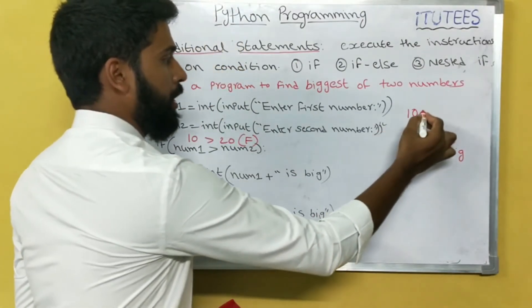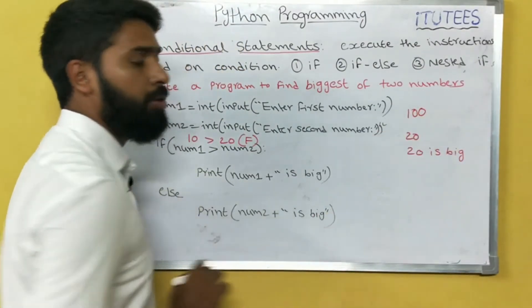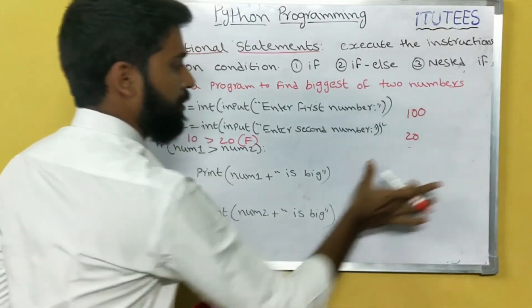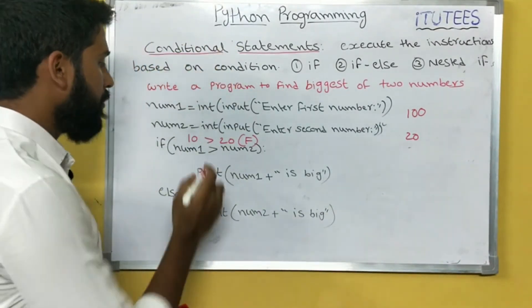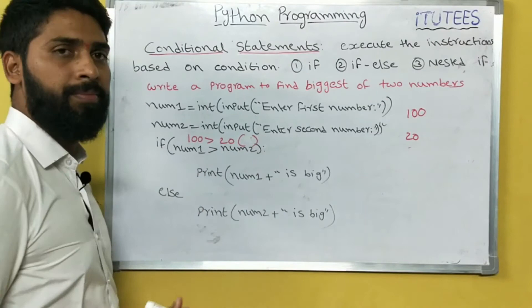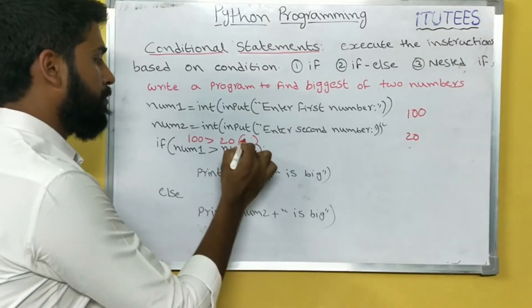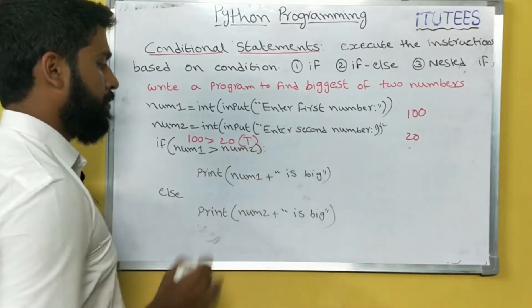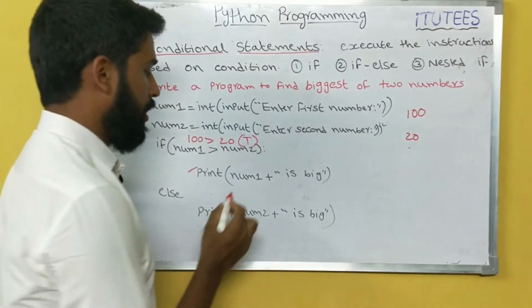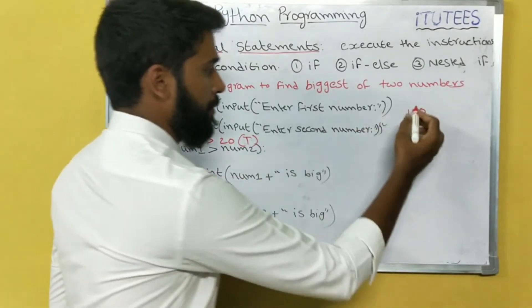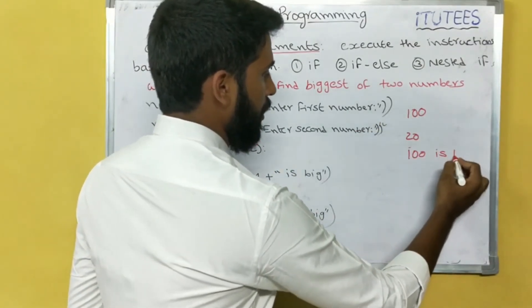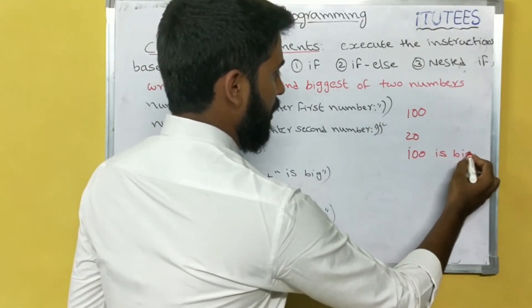Now taking another example: 120 and 100. Is 120 greater than 100? True. So we execute this instruction — number1 is 120, so 120 is big.